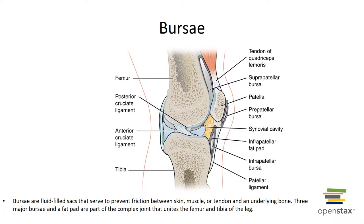A meniscus is a pad of fibrous cartilage situated between opposing bones within a synovial joint. Menisci may subdivide a synovial cavity, channel the flow of synovial fluid, or allow for variations in the shapes of the articular surfaces. Ligaments also support, strengthen, and reinforce synovial joints. Intrinsic ligaments, also called capsular ligaments, are parallel bundles of fibers creating thickenings within the joint capsule. Extrinsic ligaments are separate from the joint capsule and may pass outside (extracapsular) or inside (intracapsular) the joint capsule.